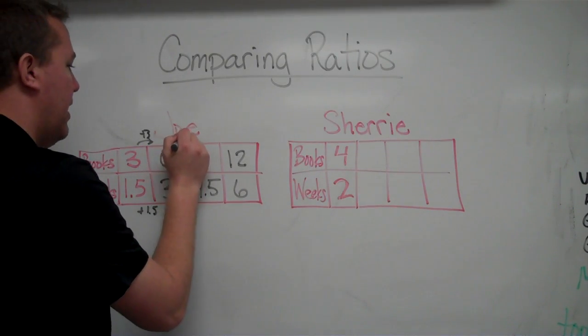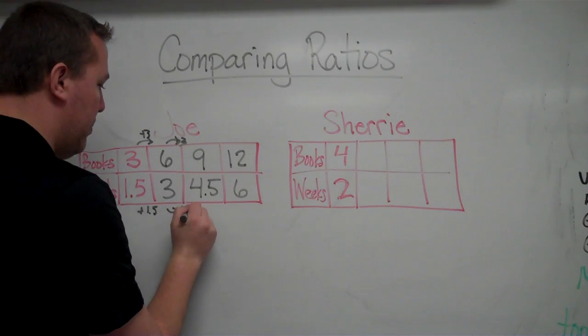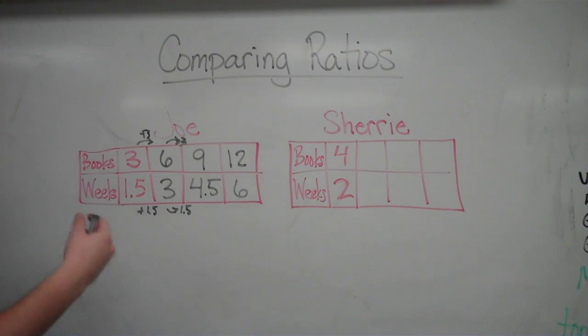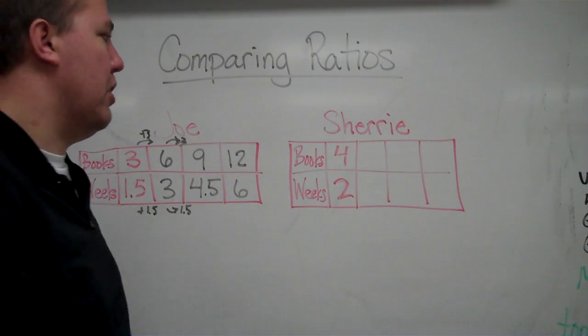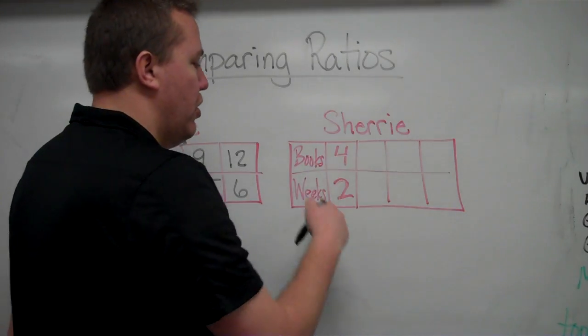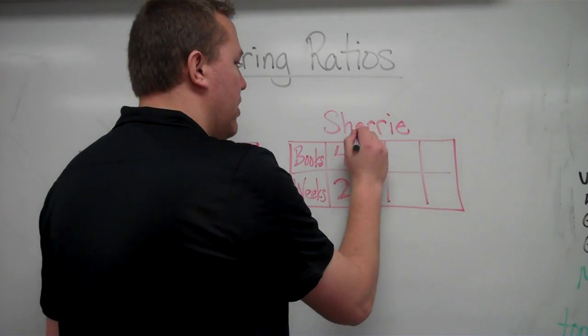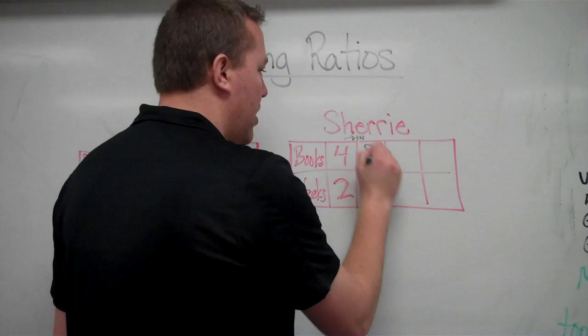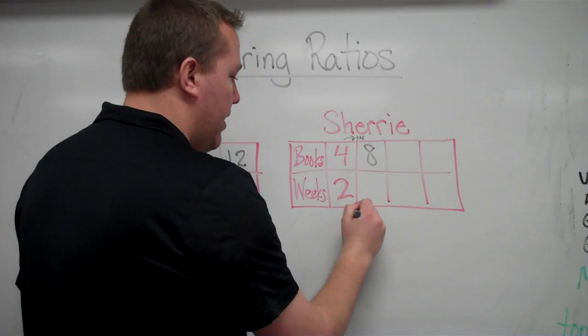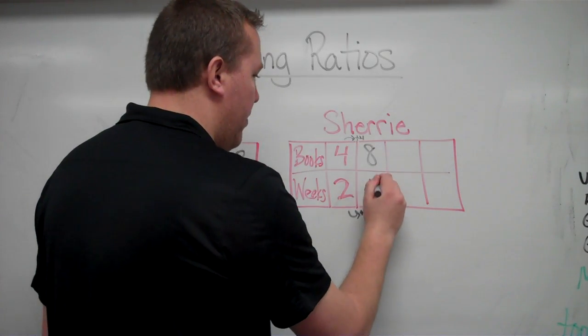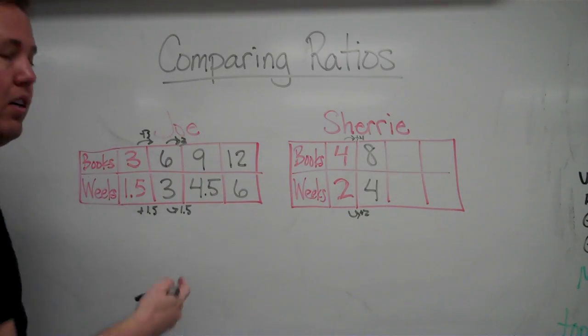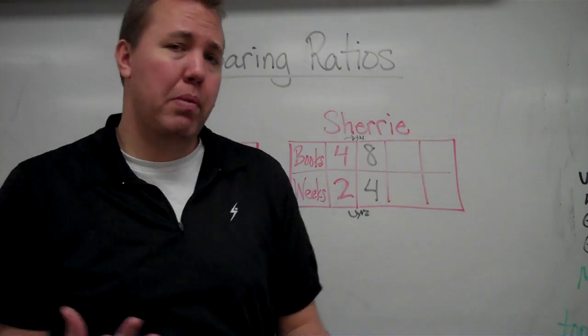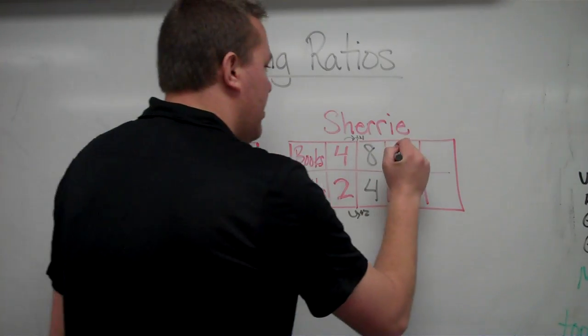We've added three on top each time and added one and a half on bottom each time, because that's our rate, the comparison of books and weeks. Sherry over here, comparison of books to weeks. Four for every two weeks. On this, we're going to add four every time. Eight, we're going to add two on the bottom every time. Four. Do we have an eight up here? Nope. Do we have a four over here? Nope. We still can't compare them like that.